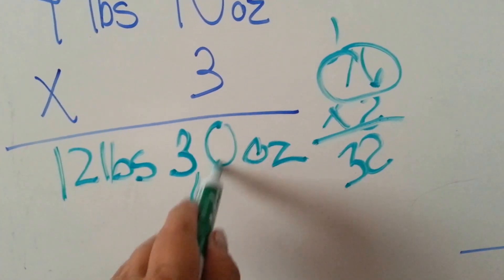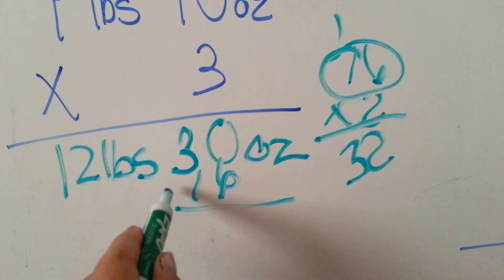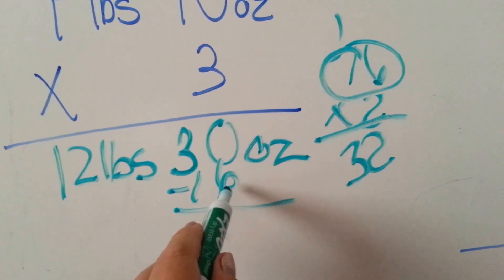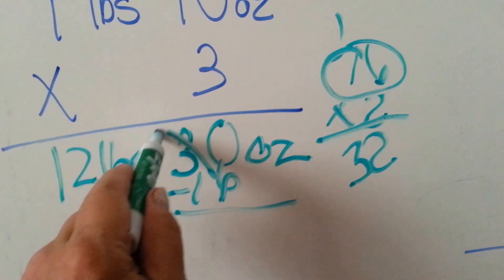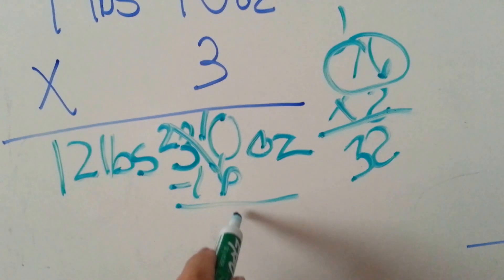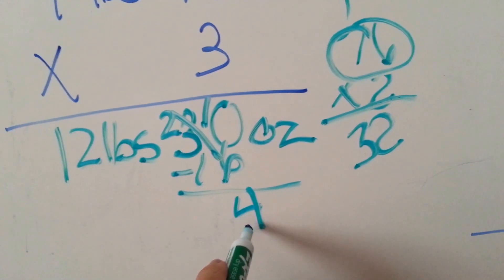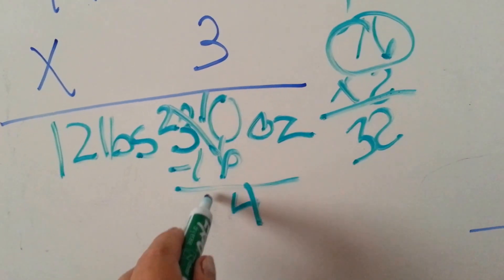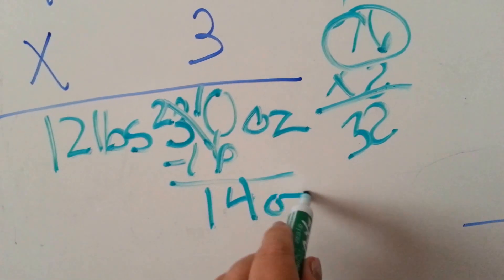So we know we can get 1 pound out of this. So let's take the 16 ounces for that 1 pound away from here. 6 from 0 you can't do, so we have to borrow. That becomes a 2. That becomes a 10. 10 take away 6 is 4. 2 minus 1 is 1. So we get 14 ounces.